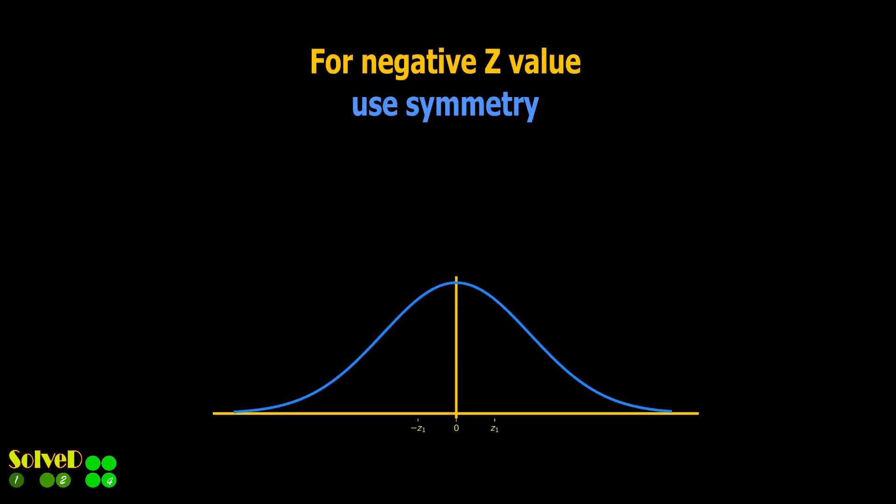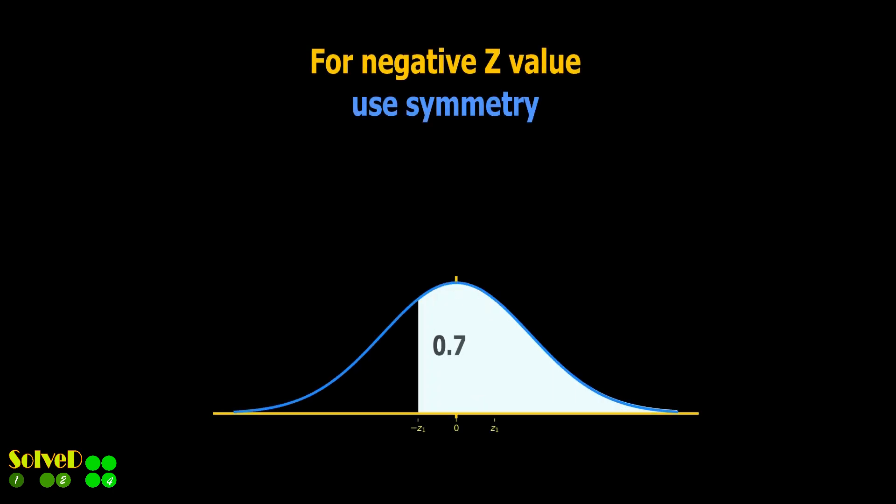Due to symmetry, the area to the right of minus Z1 is the same as the area to the left of plus Z1.